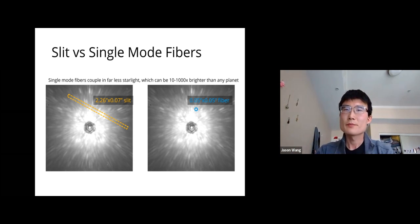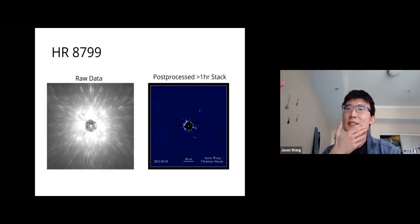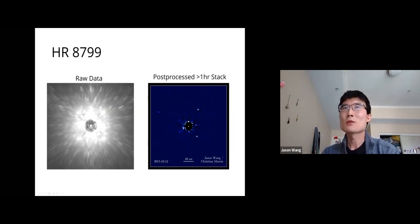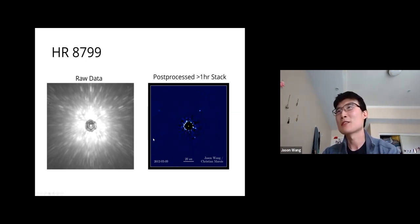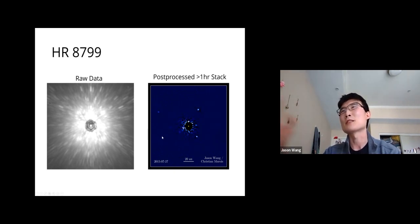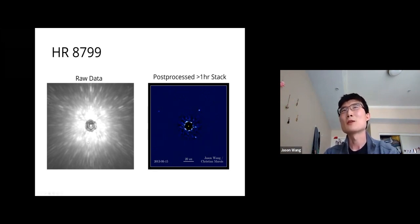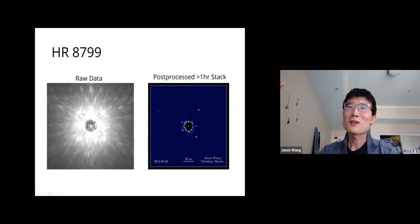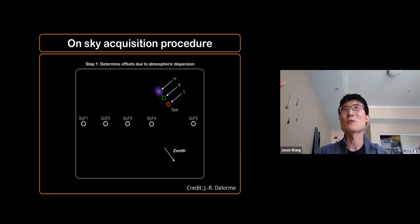For HR 8799 the raw data is heavily dominated by scattered starlight—the nice planet images you're used to seeing require an hour of data and post-processing. Placing the fiber on the planet using only the raw live image is one of the main technical challenges of KPIC.